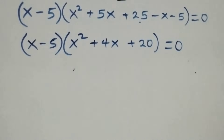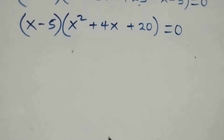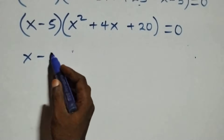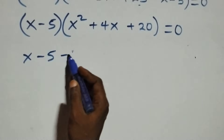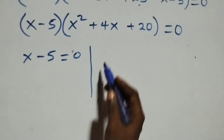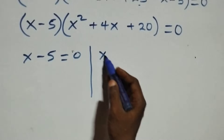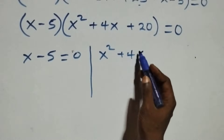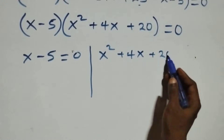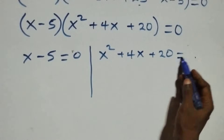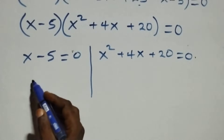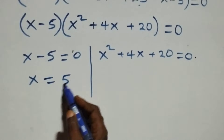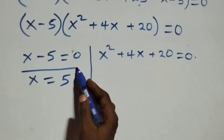From here we have two possible cases: x minus 5 equals to zero, or we have x squared plus 4x plus 20 equals to zero. On this side, the first case gives x equals to 5, which is a real solution.